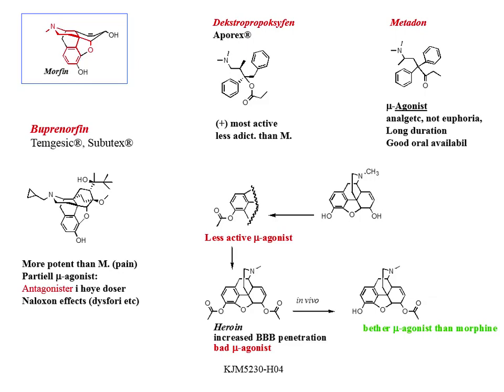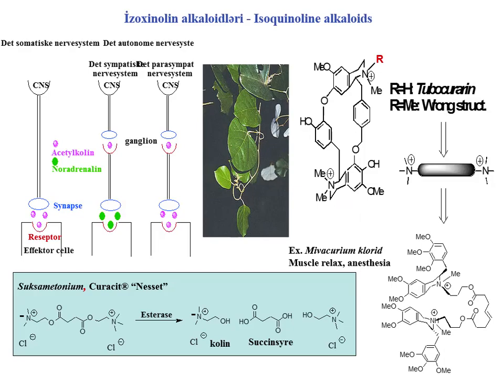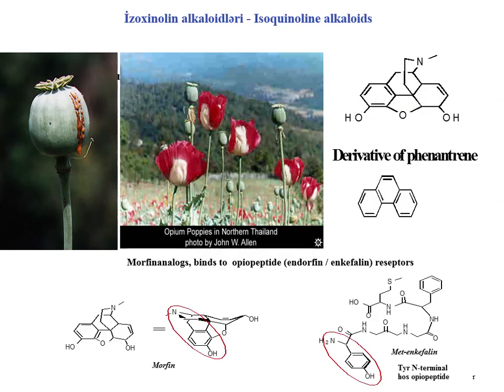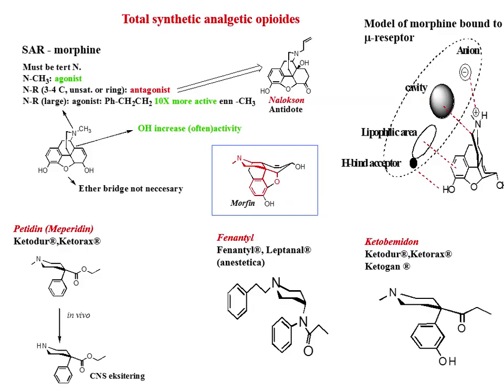Knowing the distribution and accumulation of toxins is of great importance for the correct selection of objects for chemical and toxicological analyses. Most toxins that enter the body form complex or other chemical compounds with proteins, lipoproteins, and blood-forming elements. The strength of complex compounds formed in the body depends on the nature of the substance forming the complex and the type of bond formed. As a result of the interaction of toxins with proteins and other substances, covalent, ionic, hydrogen, ion-dipole, and dipole-dipole bonds are formed. The most durable is the covalent bond — metals can remain in the body for a long time due to covalent bonds with proteins.